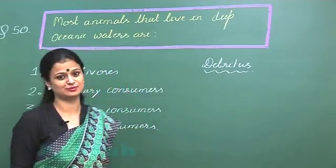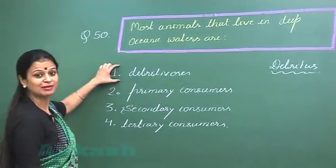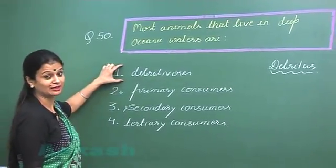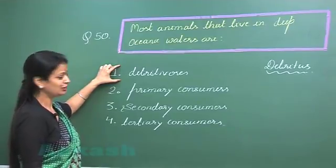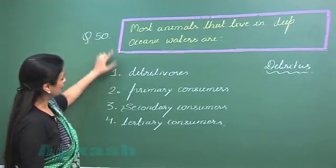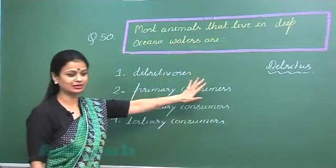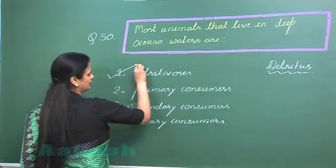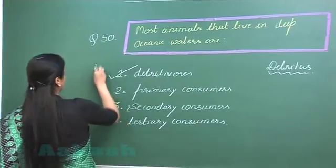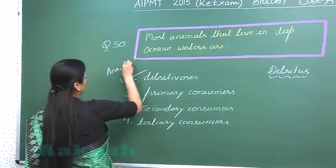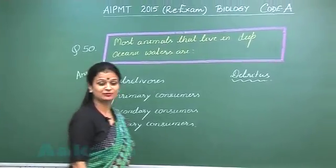The organisms which feed on the detritus — what do you call them? They are known as detritivores. So in this case, the most animals that would be present here are detritivores. The right option for question number 50 is option number 1.